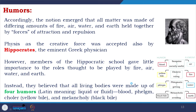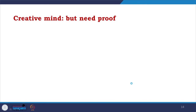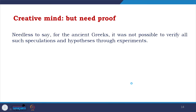They made a connection between the humours and the elements: blood with sanguine is connected to air, yellow bile with ruling is connected to fire, phlegm is connected to water, and black bile is connected to earth. They made a lot of initial observations and formed hypotheses, some of which are still valid today.